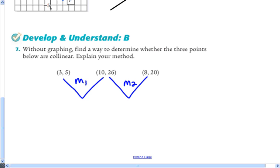then we know that those three points are collinear. So we're going to use our slope formula, where we take our Y values, which in our slope 1, that would be 26 minus 5, and 10 minus 3, and that's 21 divided by 7, which is 3. So the slope between the first two points, M sub 1 is 3,